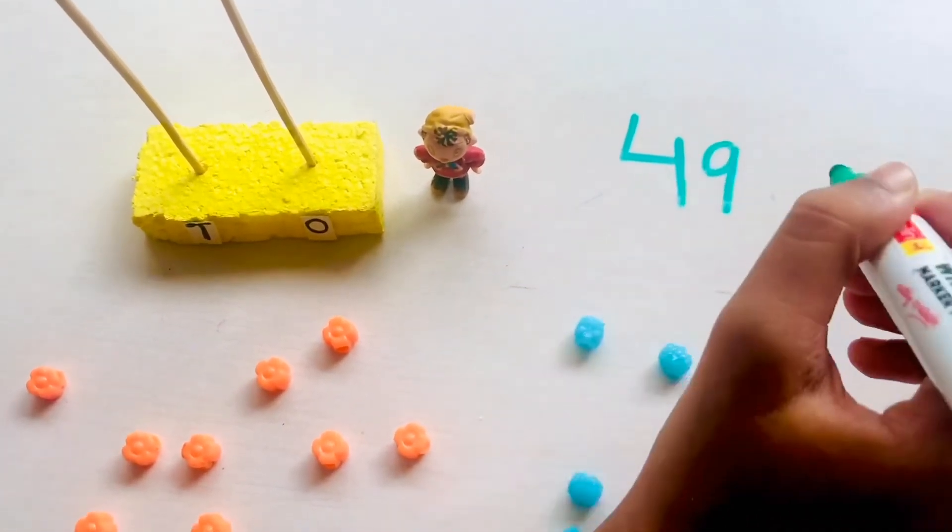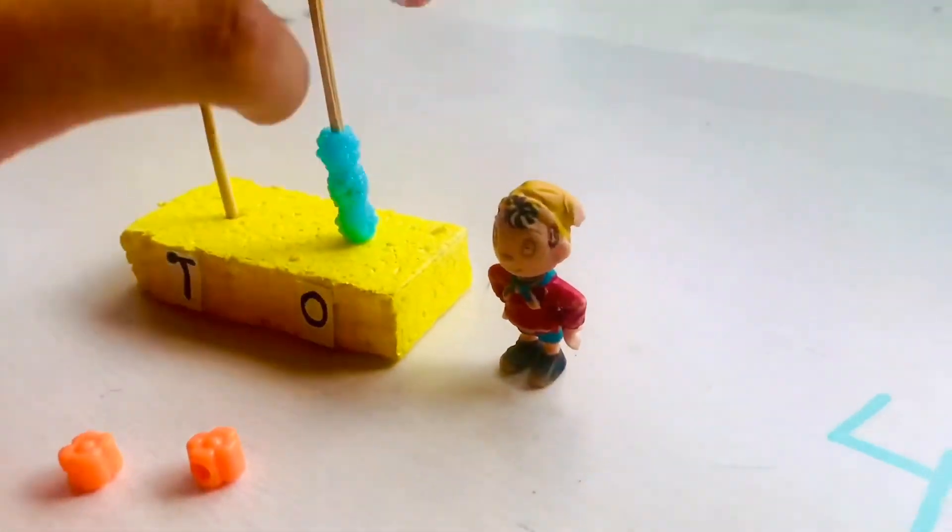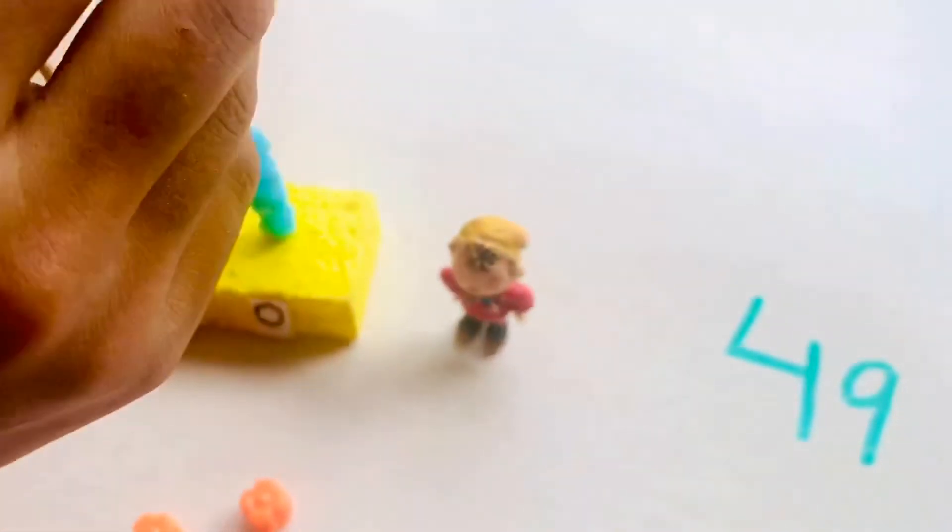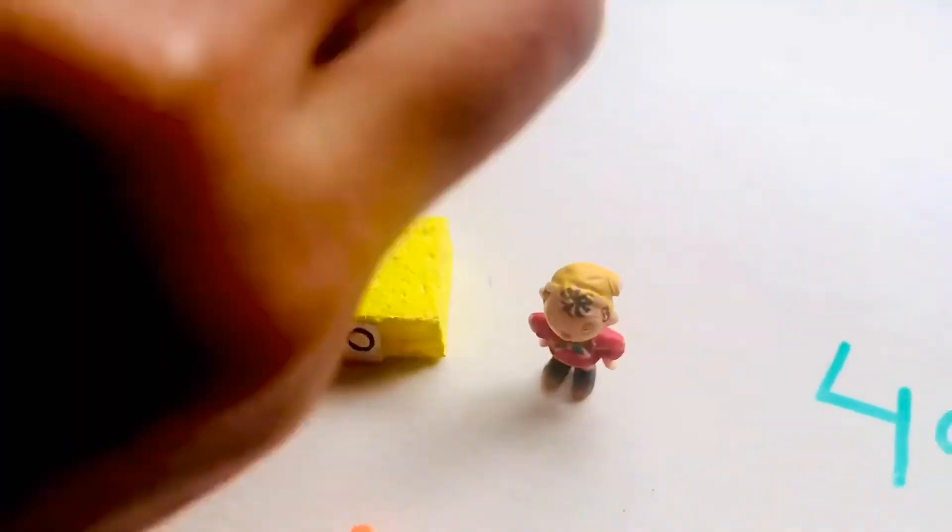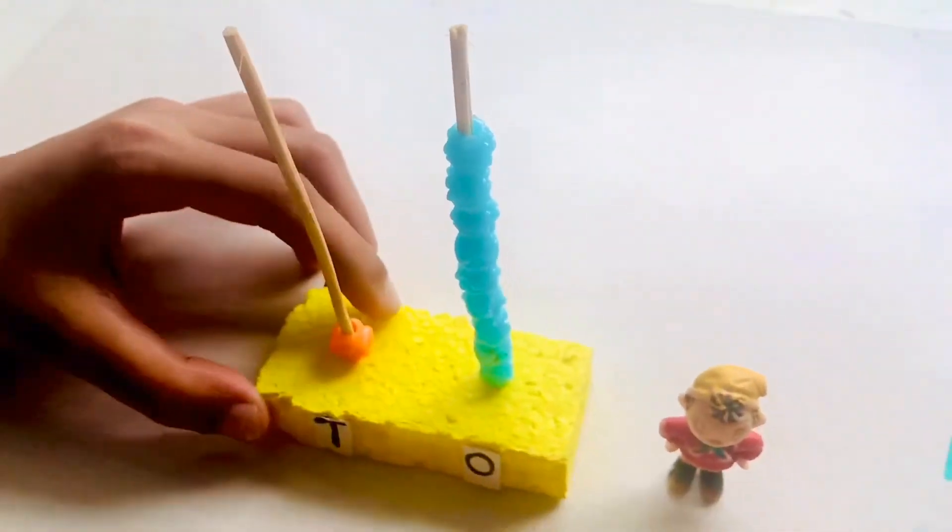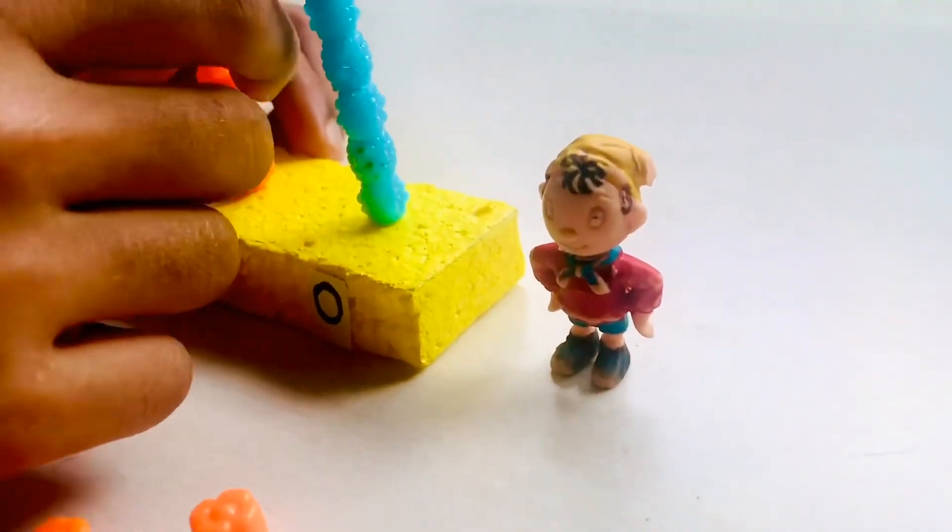We are going to make the number 49 on the abacus. We are going to begin with the units first. We count and place the 9 beads. 1, 2, 3, 4, 5, 6, 7, 8, 9. Then we start placing the orange beads on the tens. 1, 2, 3, 4.